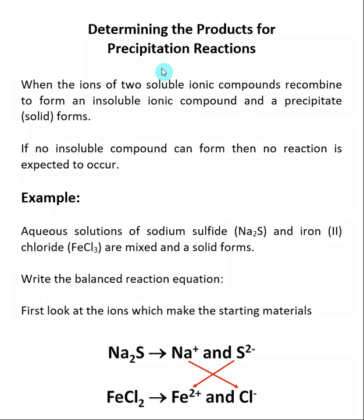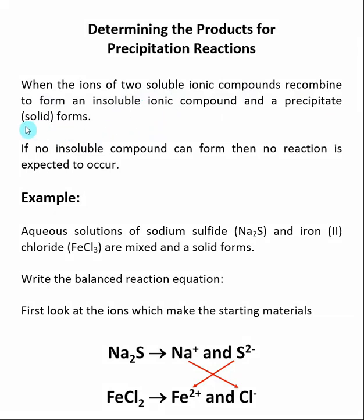We will begin a discussion on the first reaction we will be talking about during general chemistry, called a precipitation reaction. These are also called double substitution reactions. This occurs when you take two different solutions of soluble ionic compounds, mix them, and they recombine to form a soluble ionic compound and an insoluble ionic compound. It is this insoluble ionic compound that forms a precipitate, which just means a solid, and that is considered the product of our reaction.